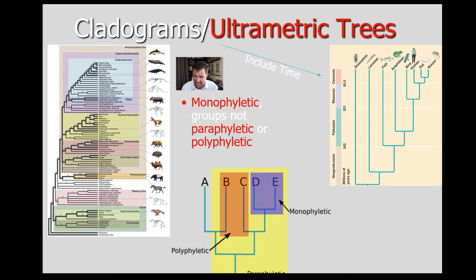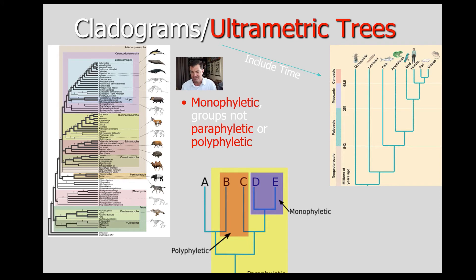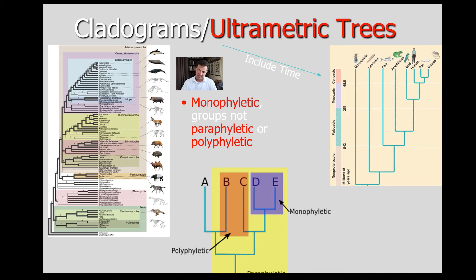In a paraphyletic group, B, C, D, and E share a most recent common ancestor — that's fine. But because you're excluding A, for example, let's say B is crocodiles, C is lizards, D is turtles, and E is snakes. If A is birds, and birds turn out to be related to crocodiles, you can't exclude birds from that group. That makes it a paraphyletic group, and cladistics people will argue that grouping doesn't really exist. That's just the rules.